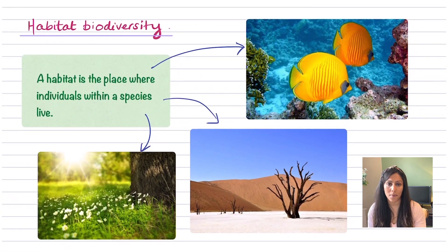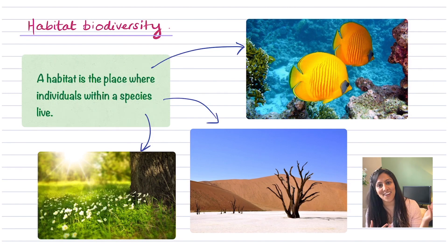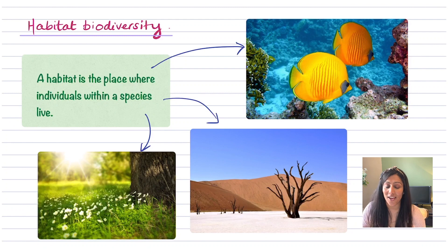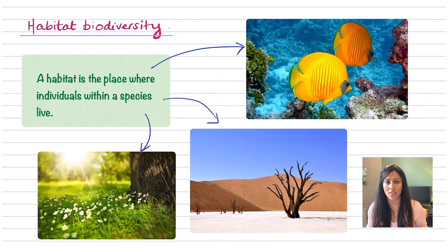Habitat biodiversity is where organisms live effectively. A habitat can be defined by an ocean, a sand dune, a woodland, a rainforest, etc. — it's where these different organisms actually live. So we can look at an ecosystem and see how many different habitats there are to assess how biodiverse it is.